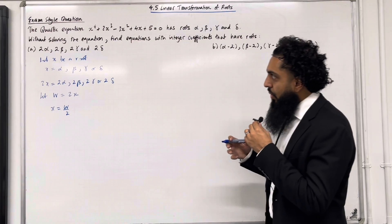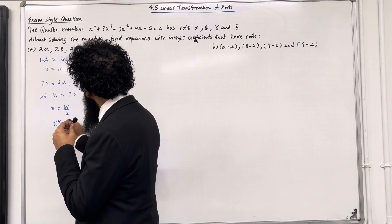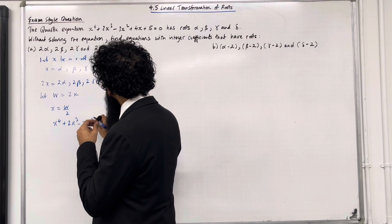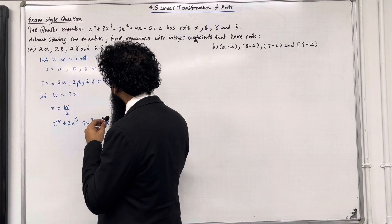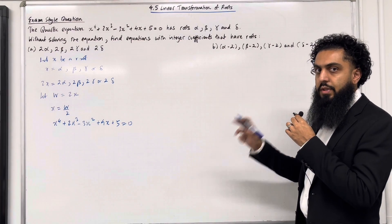Now my original quartic equation in terms of x is x⁴ + 2x³ - 3x² + 4x + 5 = 0. I'm going to replace the x's with w over 2.